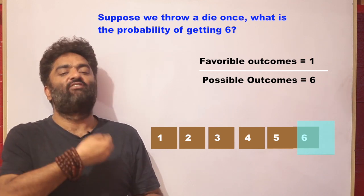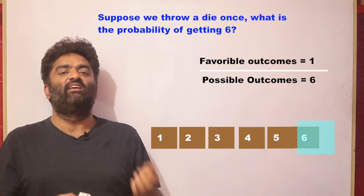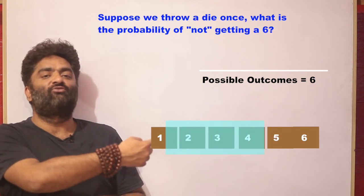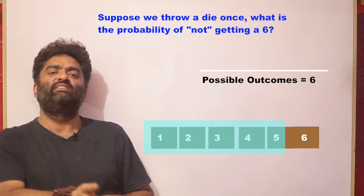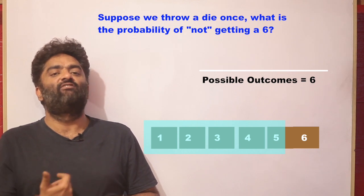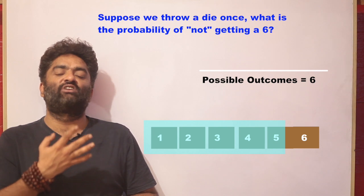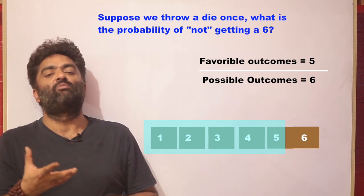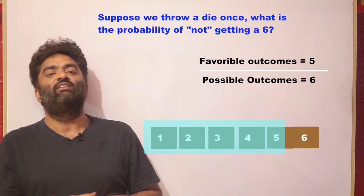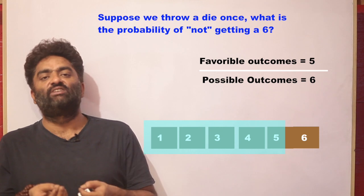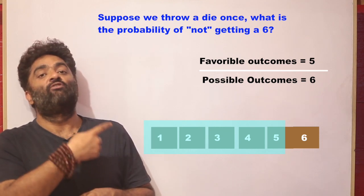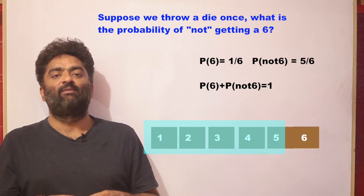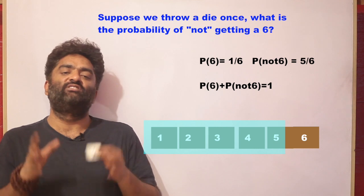Let's take one more example: what is the probability of not getting a 6? Out of 1, 2, 3, 4, 5, 6 — everything except 6 is favorable, so there are 5 favorable outcomes. The probability of not getting a 6 is 5 by 6. Notice that if you add the probability of not getting a 6 and getting a 6, the answer is always 1. We are just noticing basic stuff, no formal terms yet.